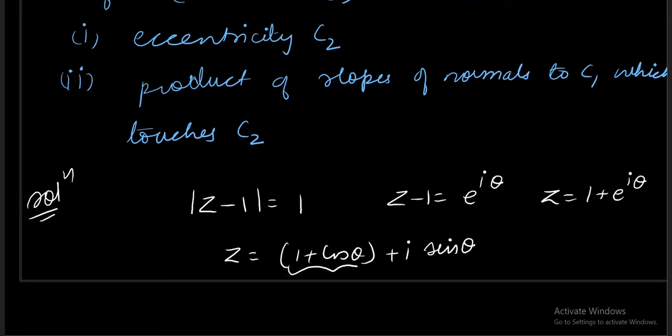So this means that wherever required, z you can take as 1 plus cos theta plus iota sin theta. So x plus iota y, this is x, this is y. In the intermediate step, I should write 1 plus cos theta. But now I will continue with this exponential form.